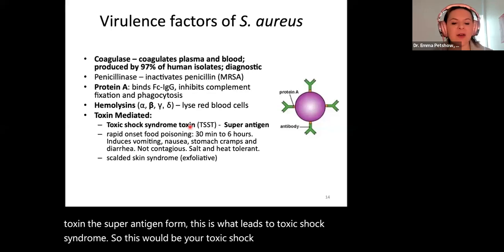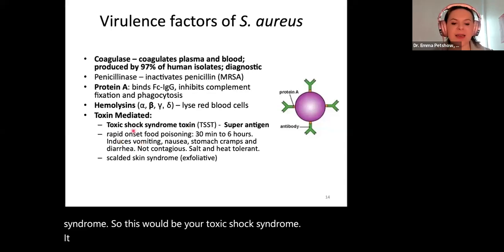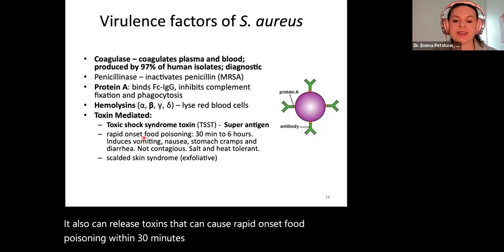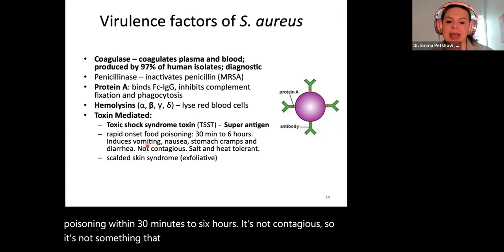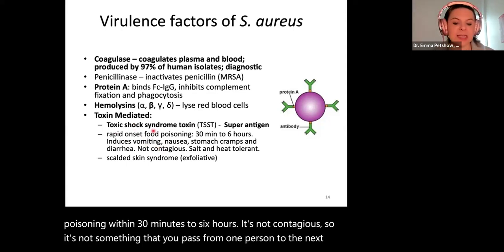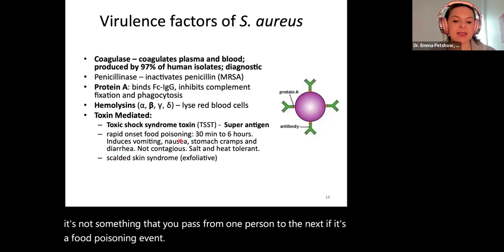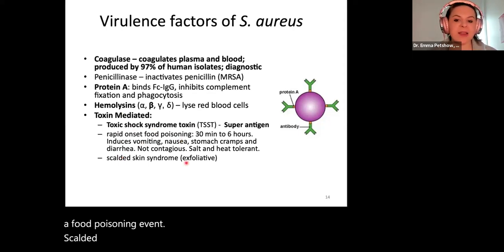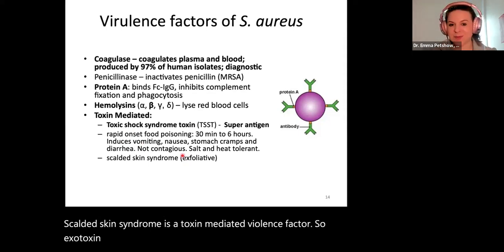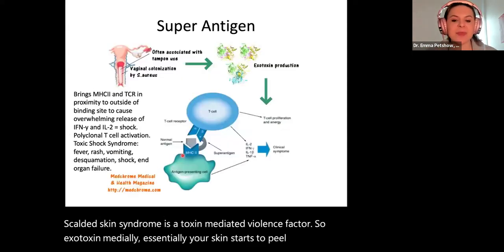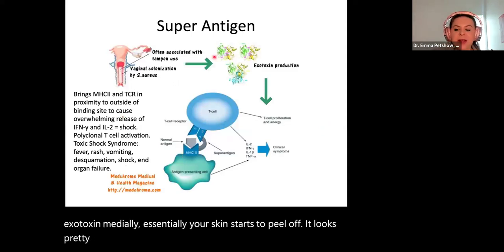Staph aureus can also release toxins that cause rapid onset food poisoning within 30 minutes to six hours. It's not contagious, so it's not something passed from person to person in a food poisoning event. Scalded skin syndrome is a toxin-mediated virulence factor — an exotoxin-mediated condition where essentially your skin starts to peel off. It looks pretty painful.